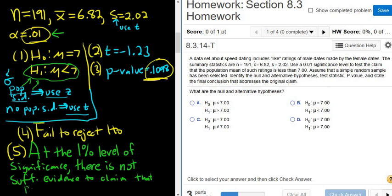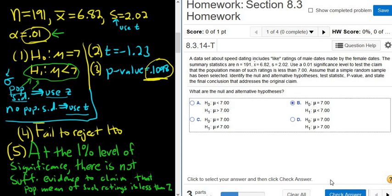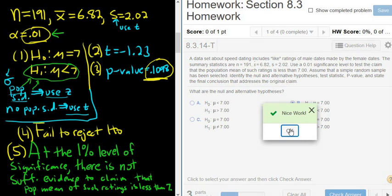So the population, pop mean of such ratings is less than, wow, barely fit it, 7. Alright, let's go ahead and answer the homework question. So it looks like this is going to be the first one, right? It matches what we have. So check answer. Let's try it. Yes. Nice work.